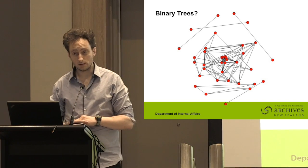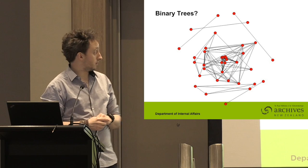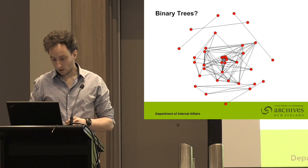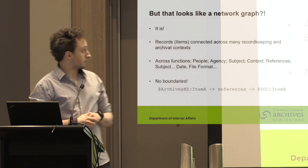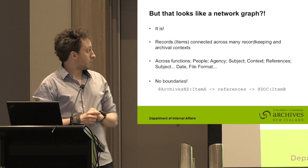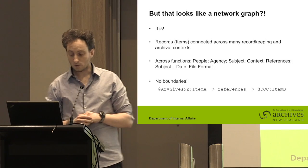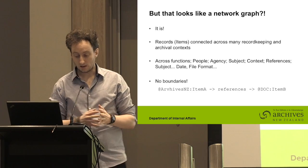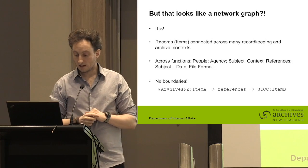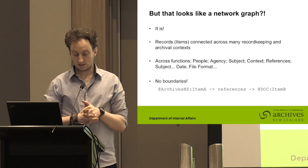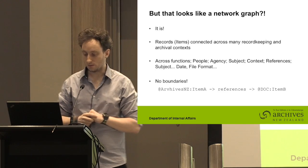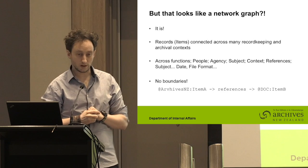Each line on here represents a relationship between each of those entities. And it looks like a network graph, and that's because it is. Records and items are connected across many different record-keeping and archival contexts — across functions, people, agencies, subject, context, references, data, file formats. There are all these connections across file formats that we can find and reach.